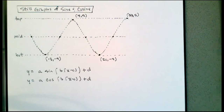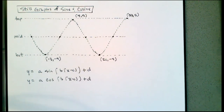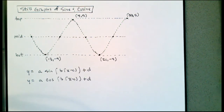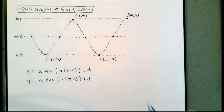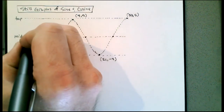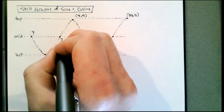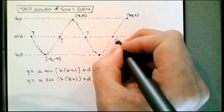Today we want to continue looking at graphs of sine and cosine. We had a problem where I asked you to write equations for a function shown in a graph. This is different from problems before — before I gave you more points to work with, but in this problem I only gave you points for the top and the bottom. I didn't give you any of the middle points, so we're going to have to do some different things to figure out where the middle is.